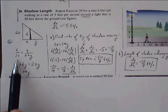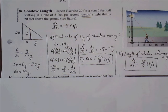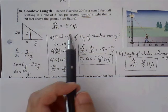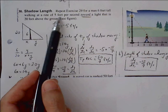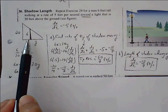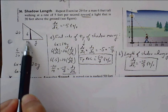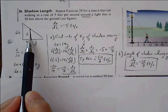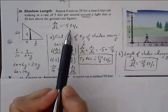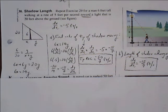Cross-multiplying to get out of fraction form and combining like terms — subtracting 6y — we get 6x = 14y. This is our starting equation. The person is walking at 5 feet per second toward the light, which affects the rate of change of x. Since the person is walking toward the lamppost, x is decreasing, so dx/dt equals negative 5 feet per second.